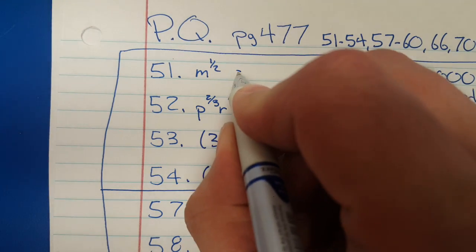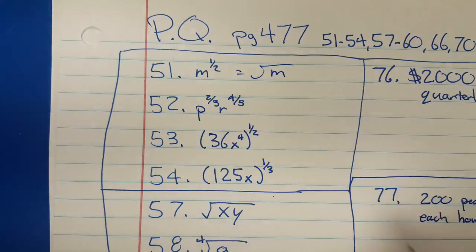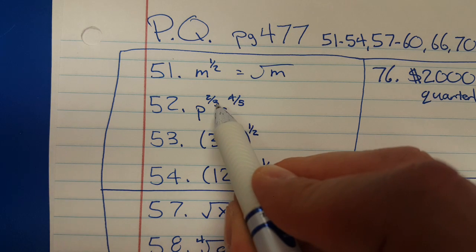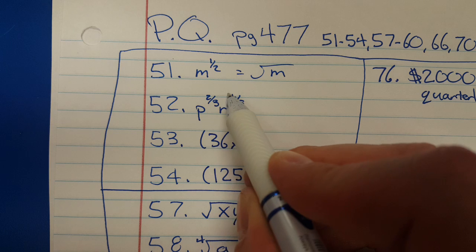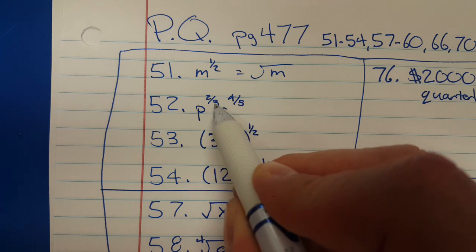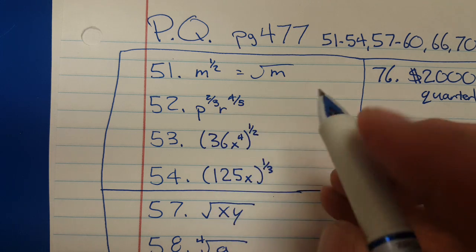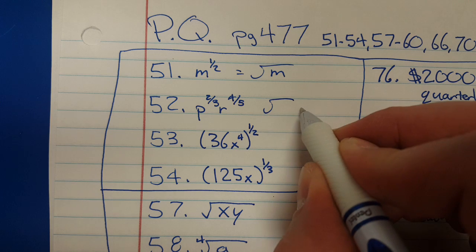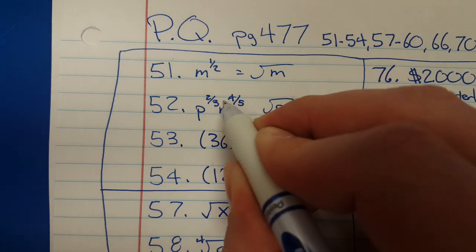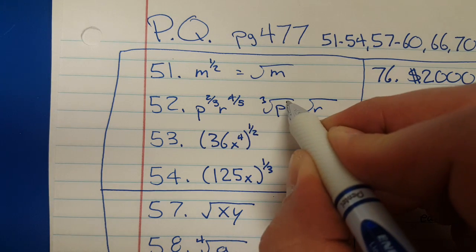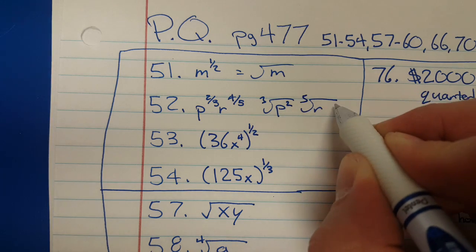Here we've got two radicals. This one's to a third power and a fourth... sorry, third root, a fifth root, and then these ones stay. So remember, if you're on the bottom you get kicked out, if you're on top you stay. So this one's actually gonna be two radicals. P is the base, R is the base. Three gets kicked out, two stays. Five gets kicked out, four stays.